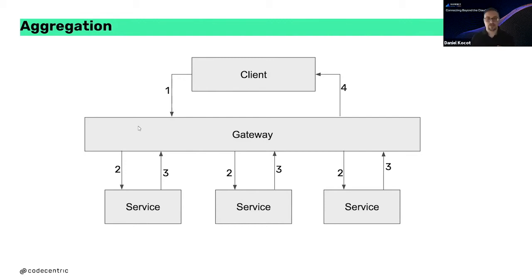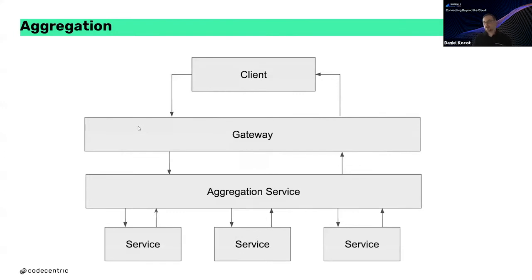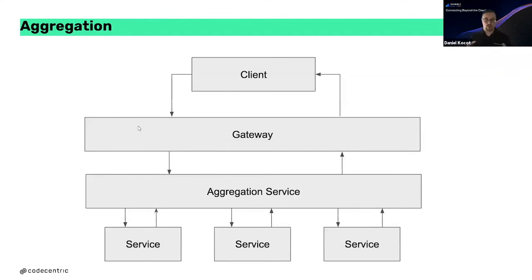When thinking about the aggregation pattern differently, we can have an aggregation service between the services and the gateway. The gateway communicates with the aggregation service rather than directly with the services, so all the business logic stays out of the gateway. This way we can still use the gateway and swap it out at any time — for example when there are security issues — changing the component in our architecture quite easily.